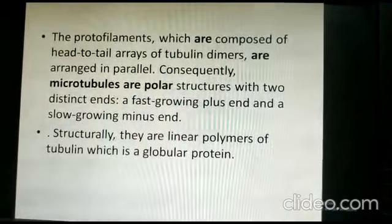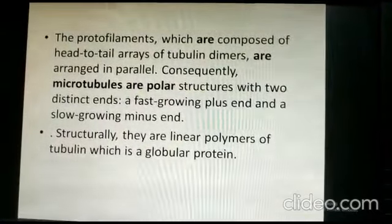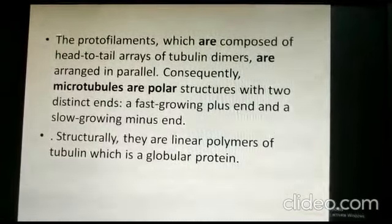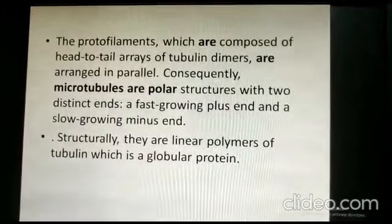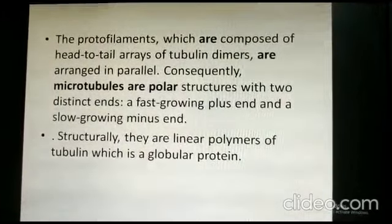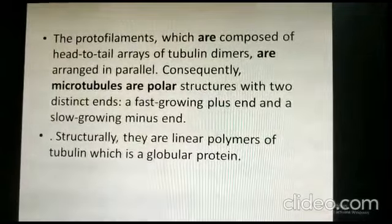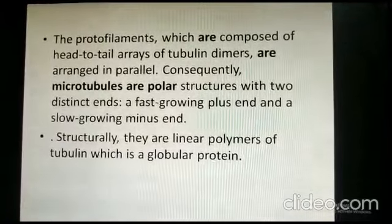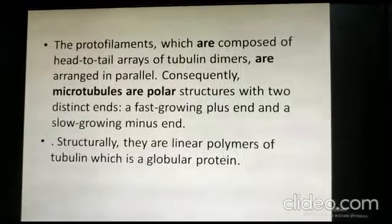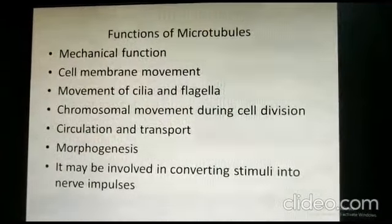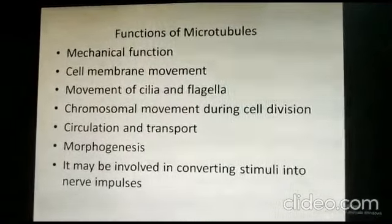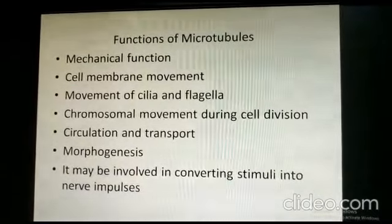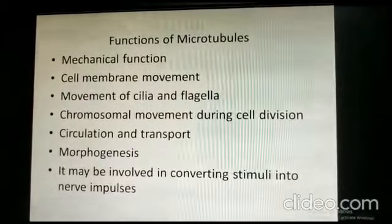Protofilaments, composed of head-to-tail arrays of tubulin dimers arranged in parallel, make microtubules polar structures with two distinct ends: a fast-growing plus end and a slow-growing minus end. Structurally they are linear polymers of tubulin, a globular protein. The functions of microtubules include mechanical support, cell membrane movement, movement of cilia and flagella, chromosomal movement during cell division, circulation and transport, morphogenesis, and possibly converting stimuli into nerve impulses.